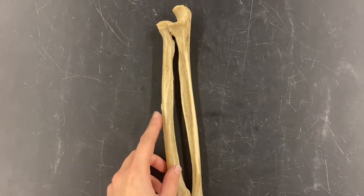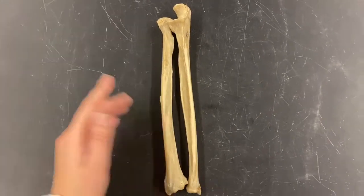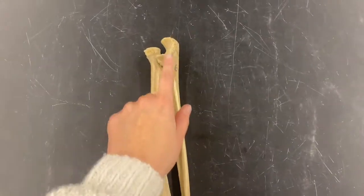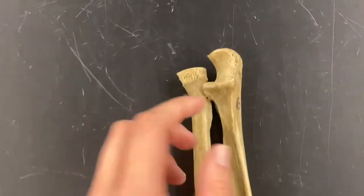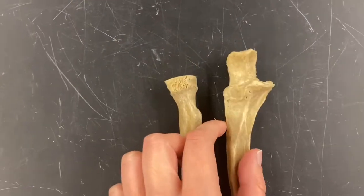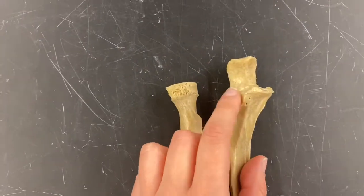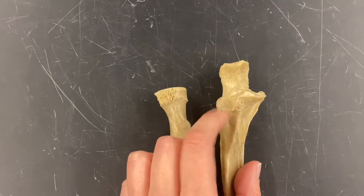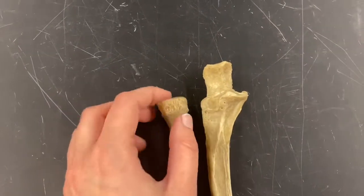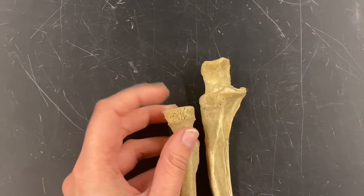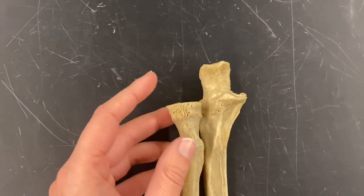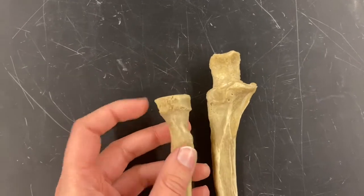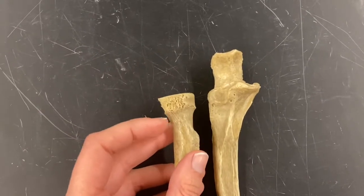These are your right forearm bones in anterior view. This is your radius, which is most lateral, and this is the ulna, which is most medial. Right here where the radial notch is located on the ulna, it articulates with the head of the radius.